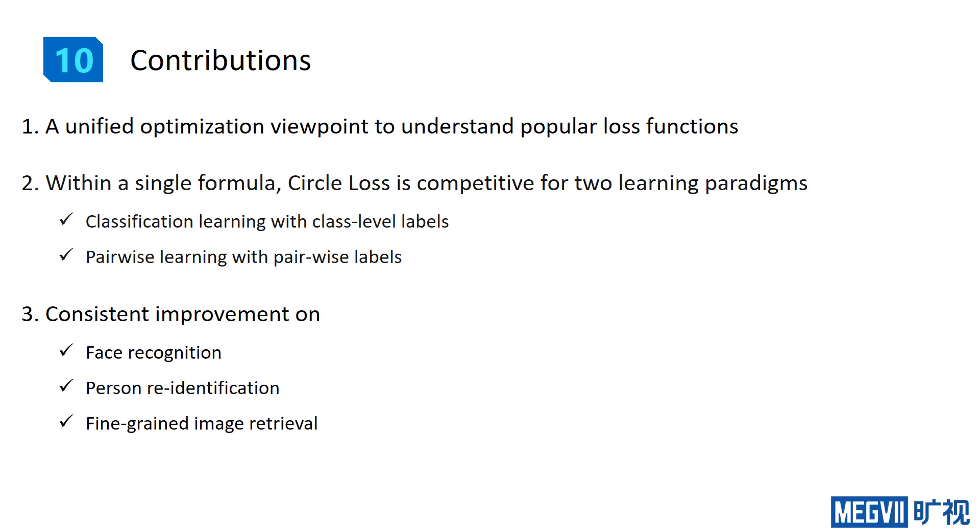To sum up, this work makes three contributions. First, we provide a unified optimization viewpoint to understand popular loss functions. Second, within a single formula, Circle Loss is competitive for both learning with class level and pairwise labels.